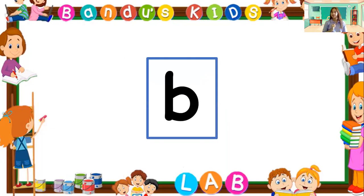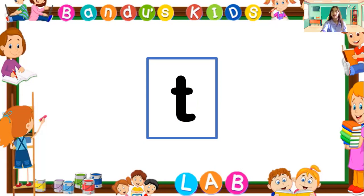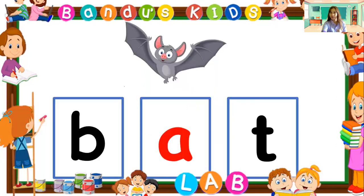Can you tell me what letter is that? B. What is the sound of letter B? B. Letter A. Next letter is T. What word can we form if we add the sounds of the three letters? B + AT equals the word bat. Let's say it one more time: B, at — bat. Very good.